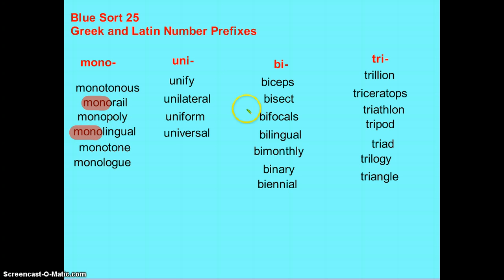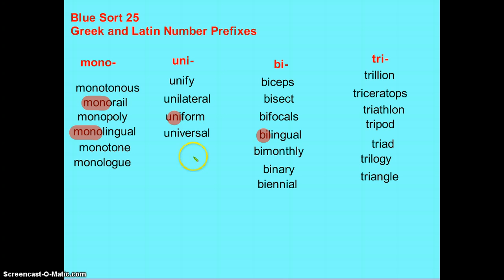That's opposed to when we change it with the prefix bi — we have bilingual, which means two languages. Uniform would mean one form, so everybody's wearing the same thing. Uni again means one.